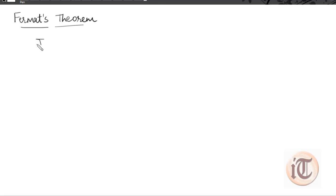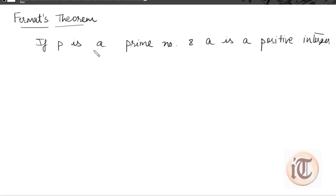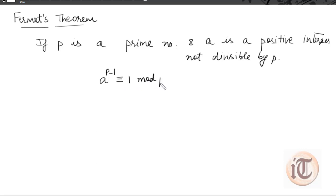Fermat's theorem states the following: if p is a prime number and a is a positive integer which is not divisible by p, then according to Fermat's theorem we can state that a to the power p minus 1 is congruent to 1 mod p.